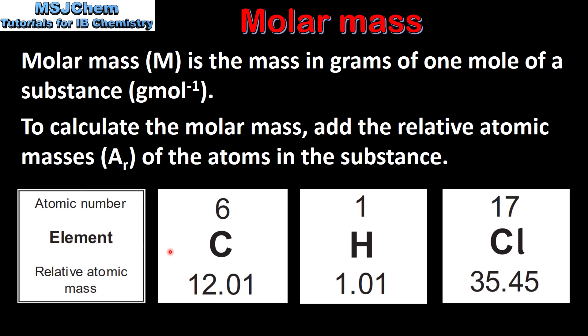The relative atomic masses of elements can be found on the periodic table. For example, carbon has a relative atomic mass of 12.01 and chlorine has a relative atomic mass of 35.45.